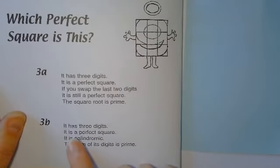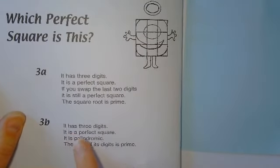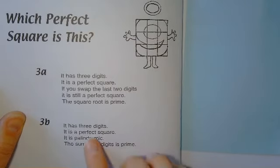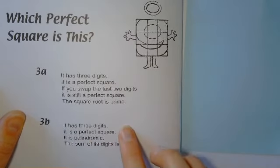Right, let's have a look at the second part. So this is a separate question now. It has three digits, and it's a perfect square. So again, we're looking for a three-digit square number.